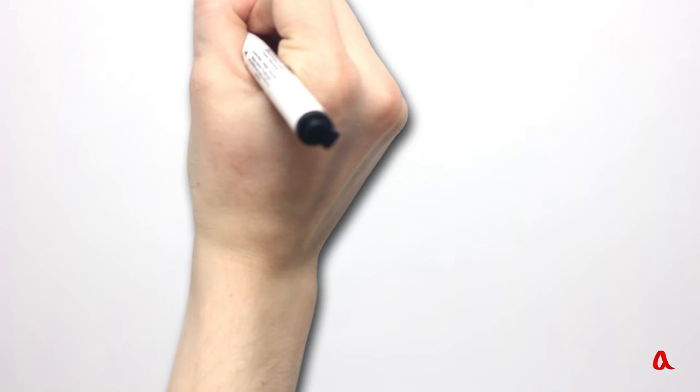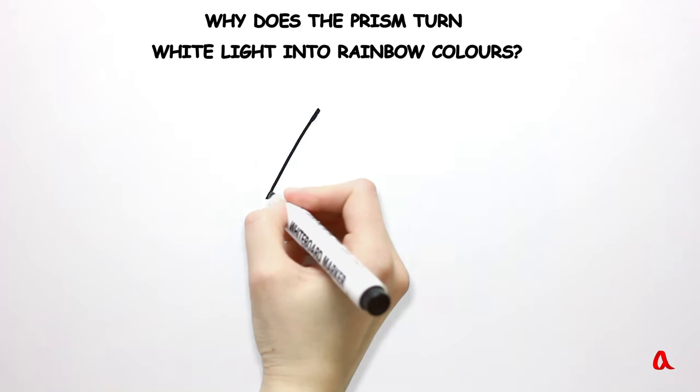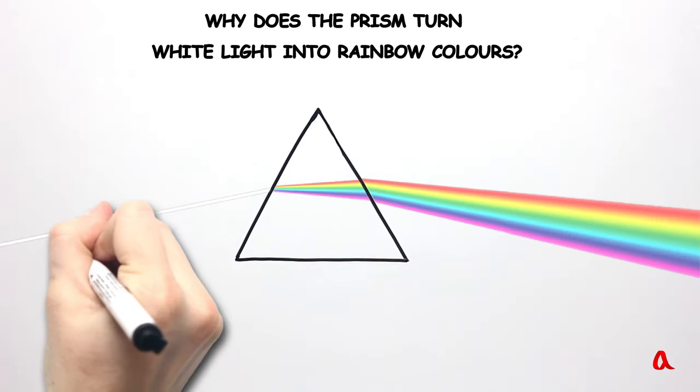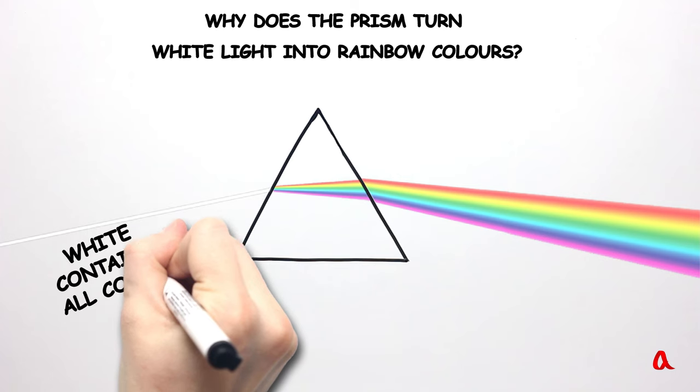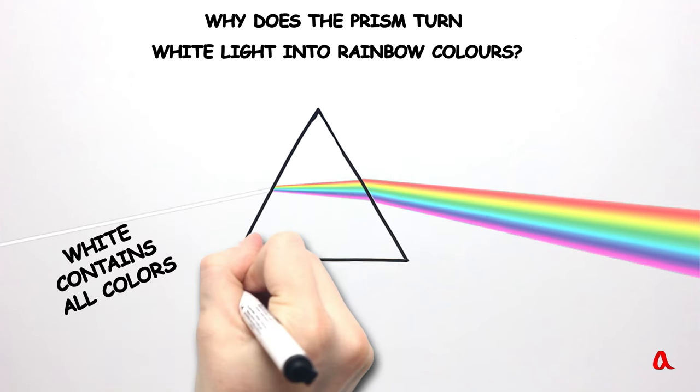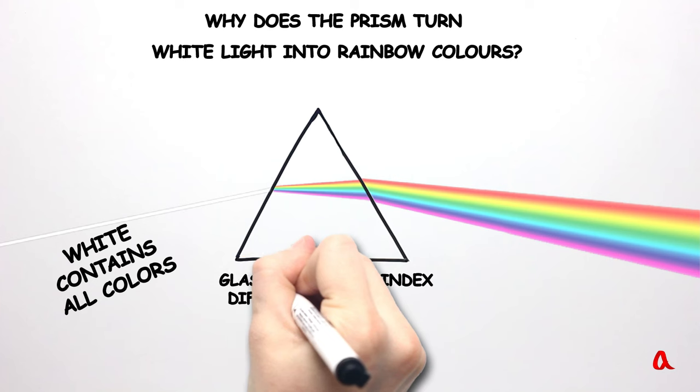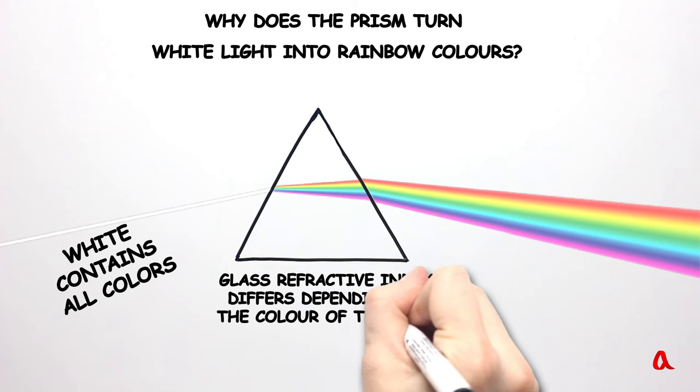Why does the prism turn white light into rainbow colors? The thing is that all the colors of the rainbow are already present in white light. Glass refraction index differs depending on the color of the beam, so the prism deflects the beams in different ways.